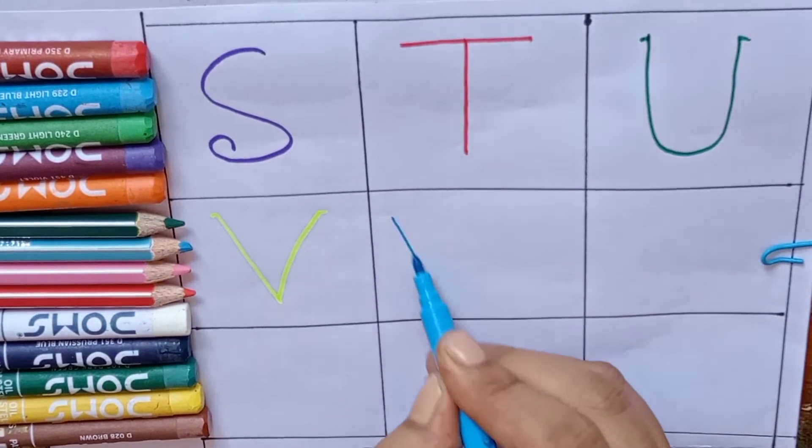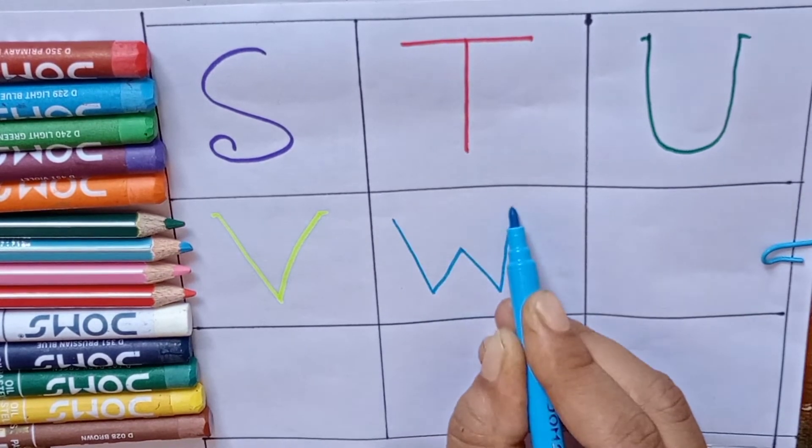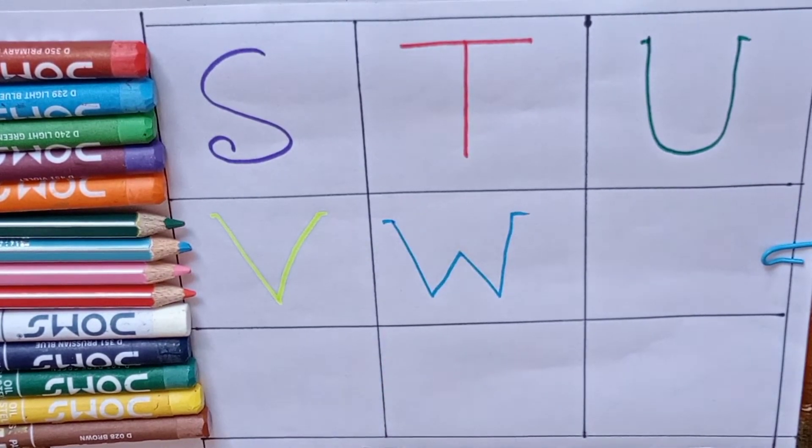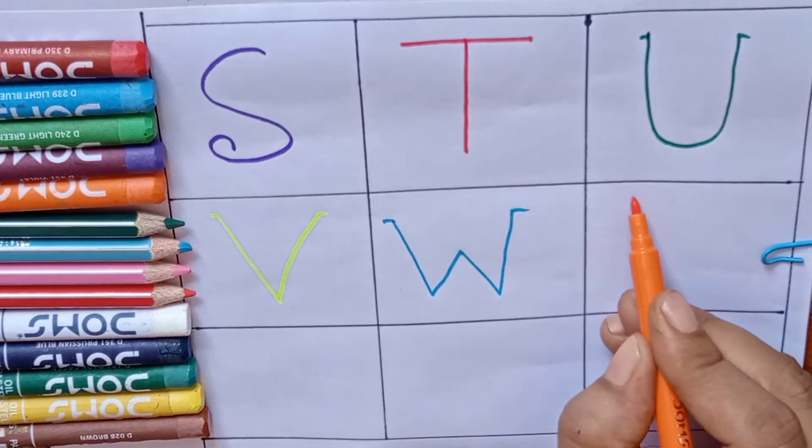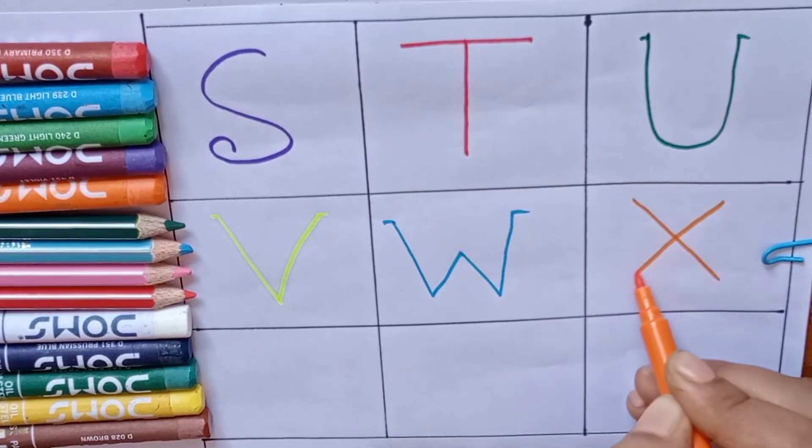Sky blue color. W. W for watermelon. Orange color. X. X for x-ray.